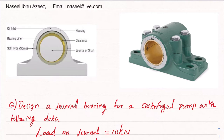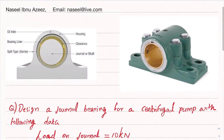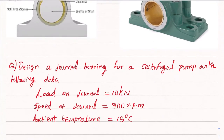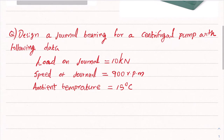Let's jump into the problem. In design questions, you get minimal information regarding the requirement. Based on that requirement, your assumptions, and standard data from the data book, you combine those together to find the proper design. Here is the question: design a journal bearing for a centrifugal pump with the following data — load on journal is 10 kilo Newton, speed is 900 rpm, and ambient temperature is 15 degrees Celsius.